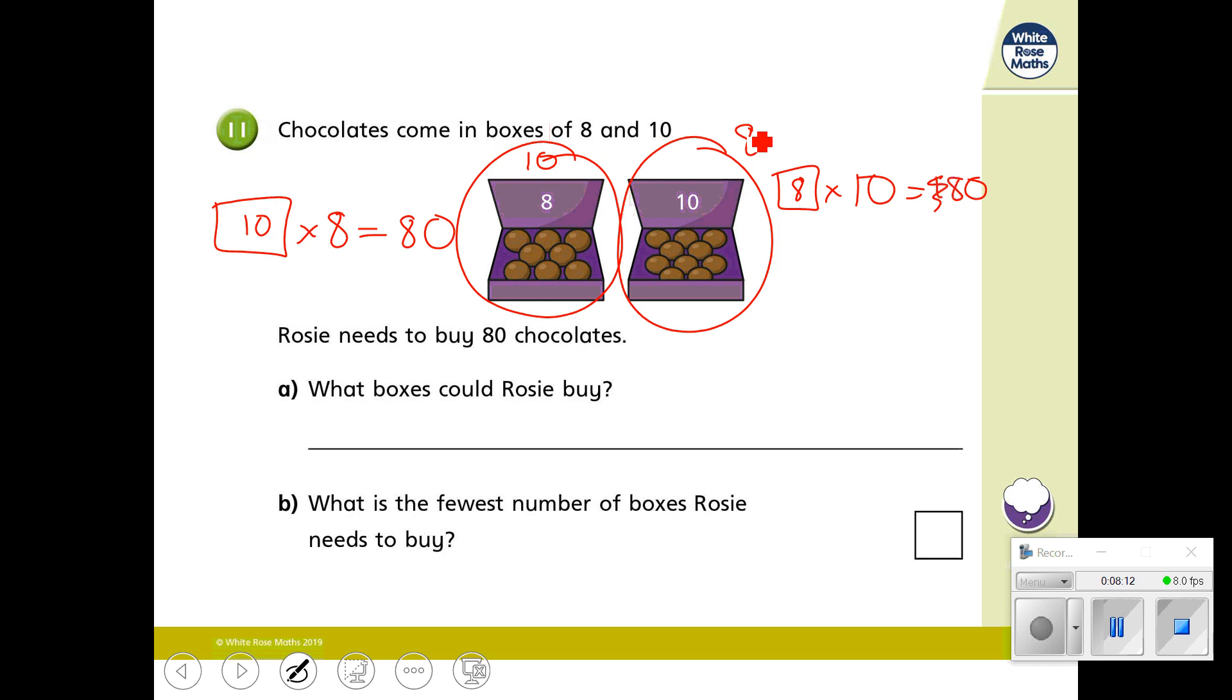Now, I'm wondering, can she have a combination of the two boxes? Now, because Mrs. Dean is so good at her times tables, I know that 8 times 5 is 40, and 40 is half of 80. So I'm going to actually have 40 chocolates made out of the boxes of 8.